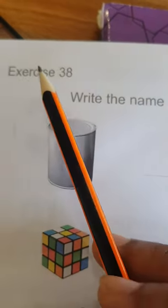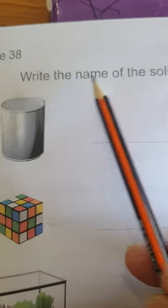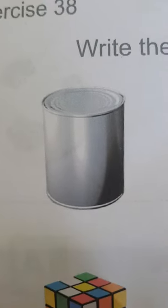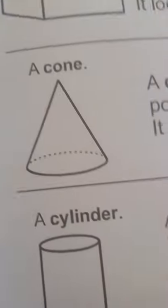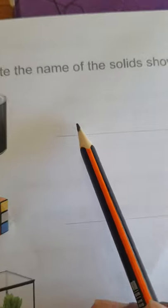We're on to page 98 and you're going on exercise 38. You're going to write the name of the solids shown. Here you're seeing this tin, this tin can. What does it look like? Does it look like a cylinder, like a barrel? If it does, you're writing cylinder over here.